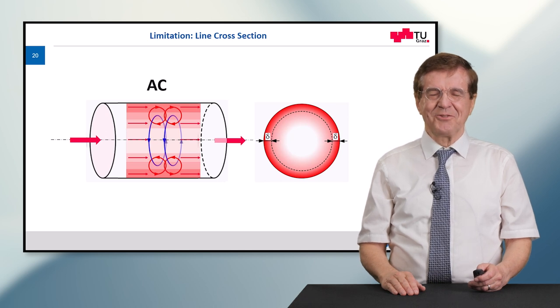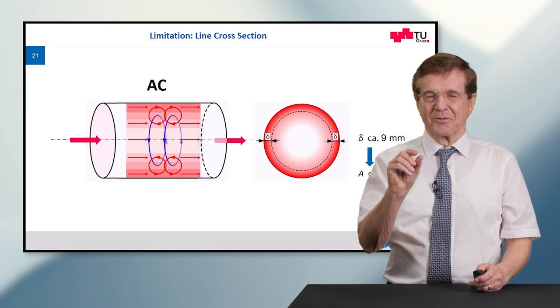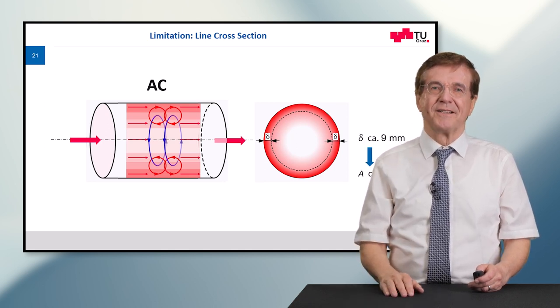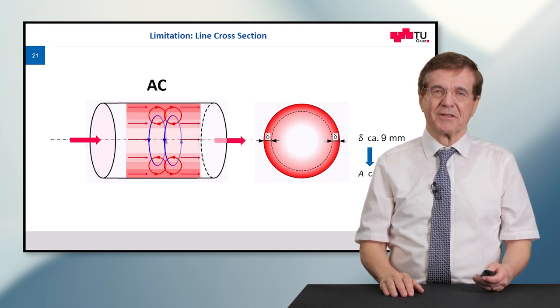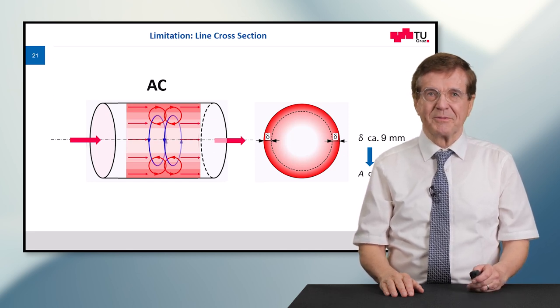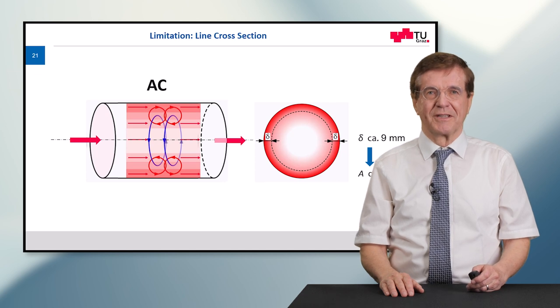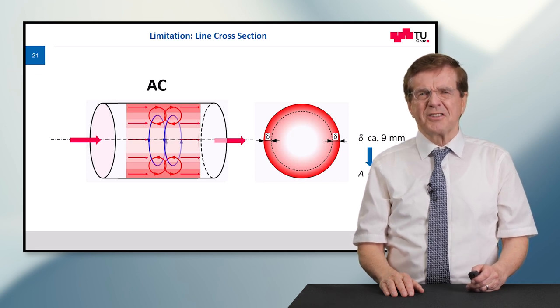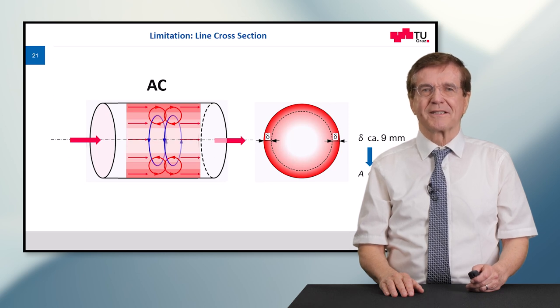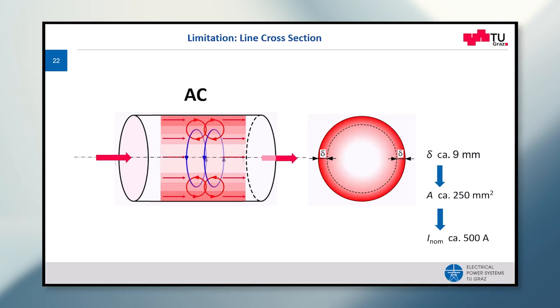Now calculations show that this so-called penetration depth is something like nine millimeters in material like copper or aluminum, which we engineers apply for the transport of electrical energy. And this generally means that only a surface of 200 square millimeters can be used. And in order not to get overheating on such a line, a typical line current under these circumstances results in 500 amps.